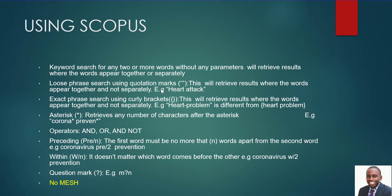The next one is phrase search using quotation marks. If you put words in quotation marks, the database will get you articles that have those two words exactly together - not separate. This is also similar to using curly brackets, but curly brackets are more specific. For example, 'heart-problem' with a hyphen is different from without one. If you want the exact phrase as it is, use curly brackets in Scopus. Commonly in a Master's dissertation, you'll use quotation marks - you don't want it to be too specific.